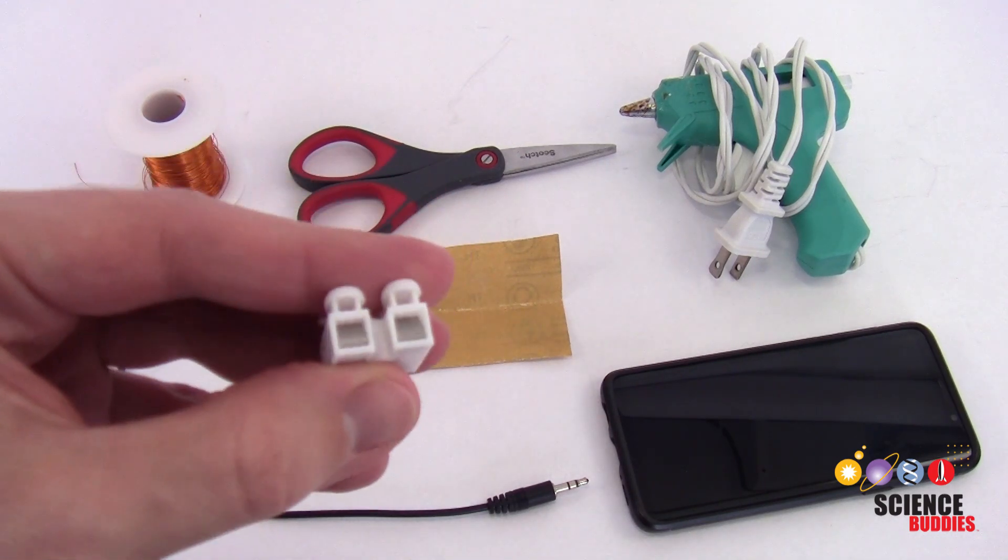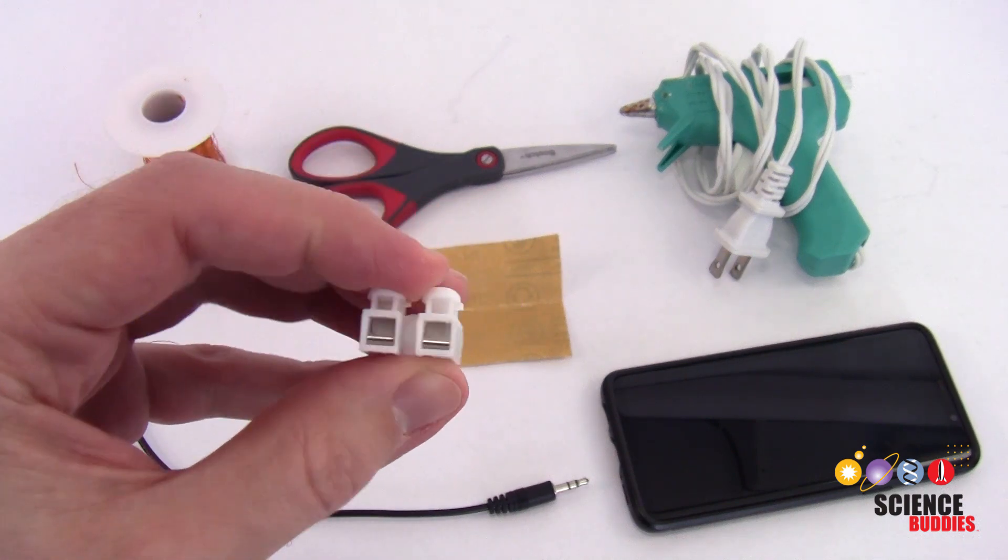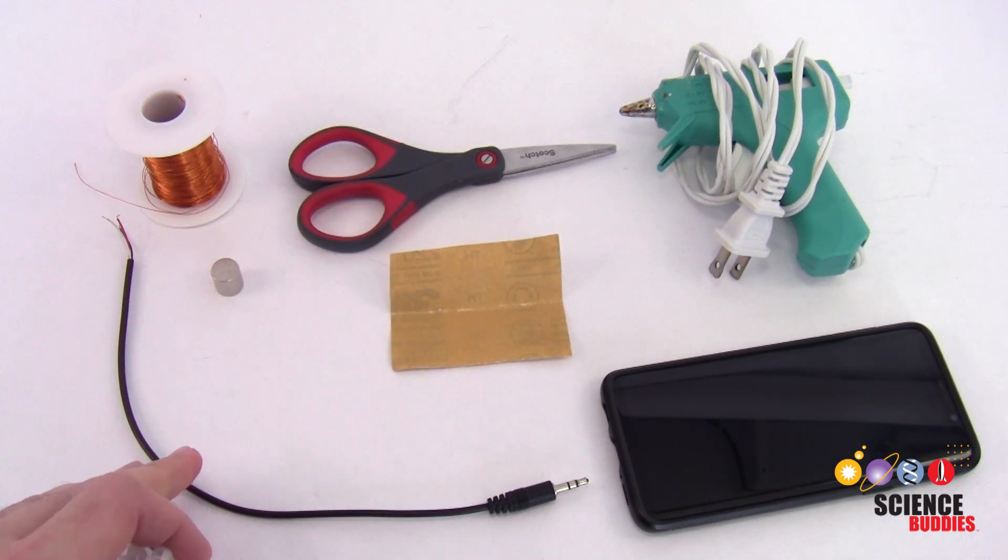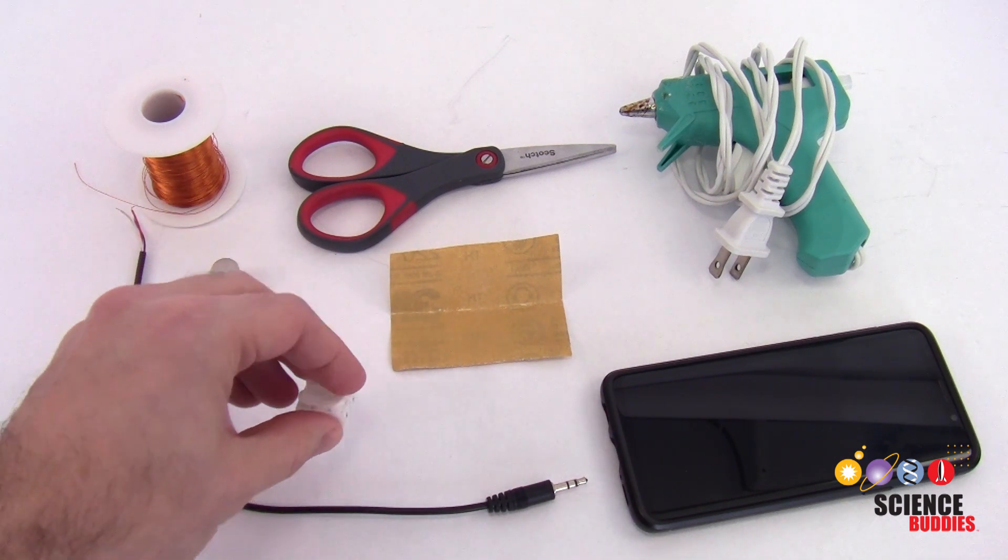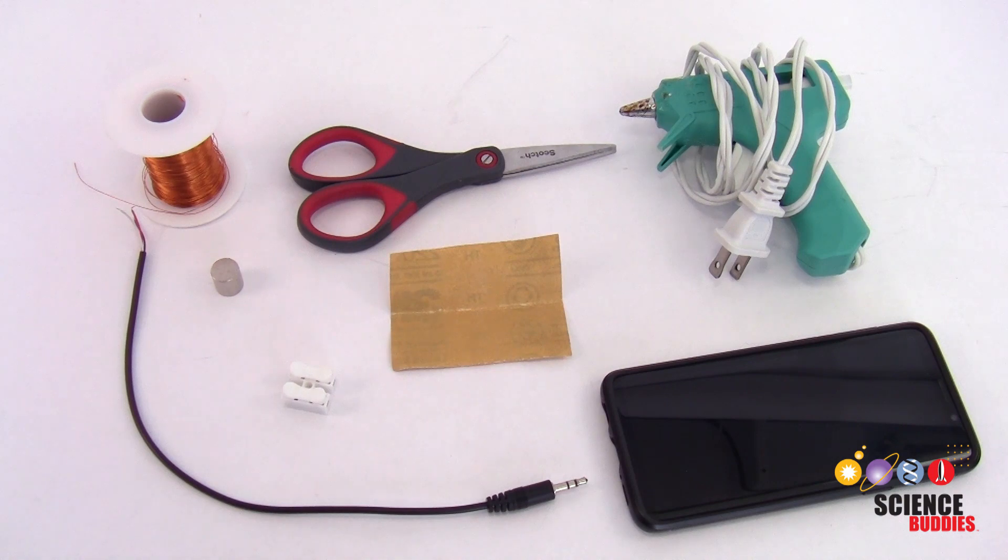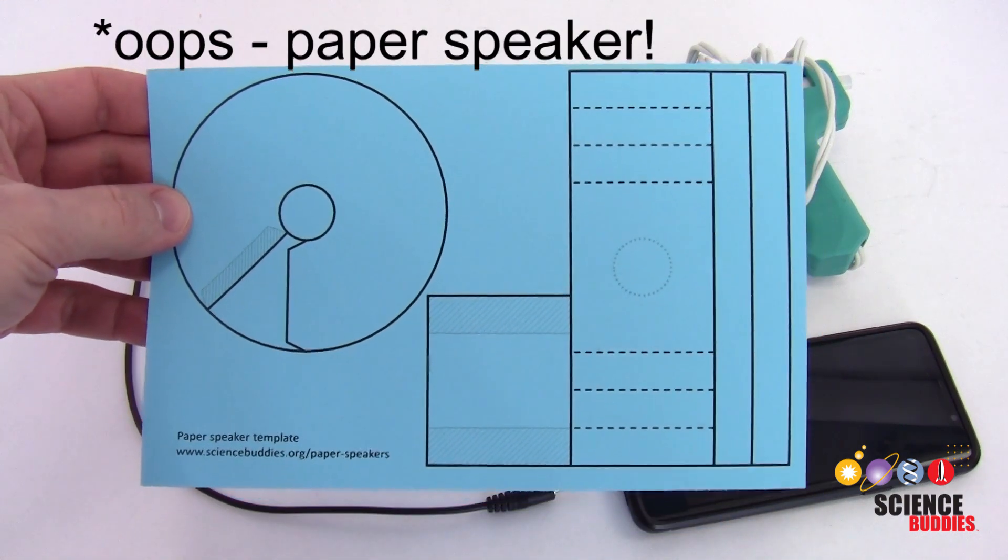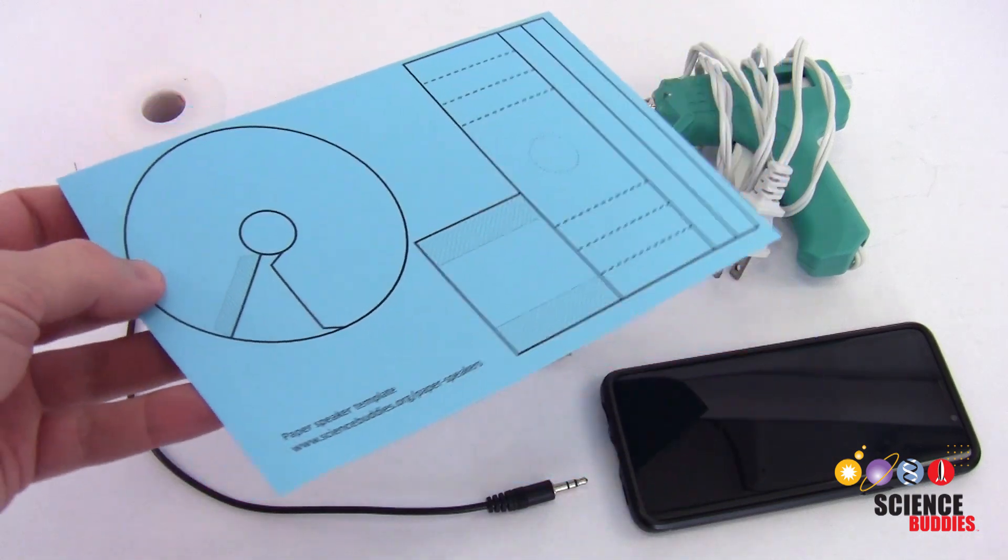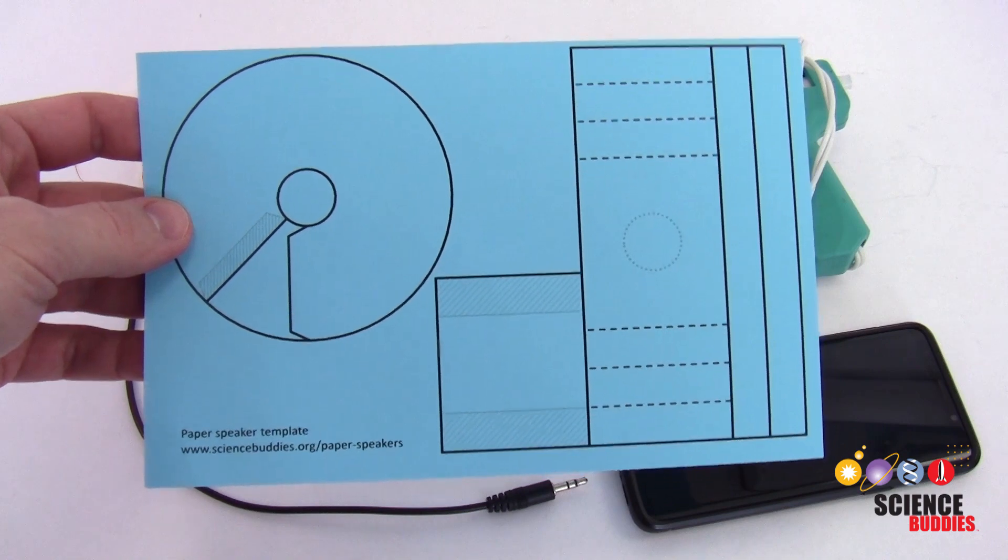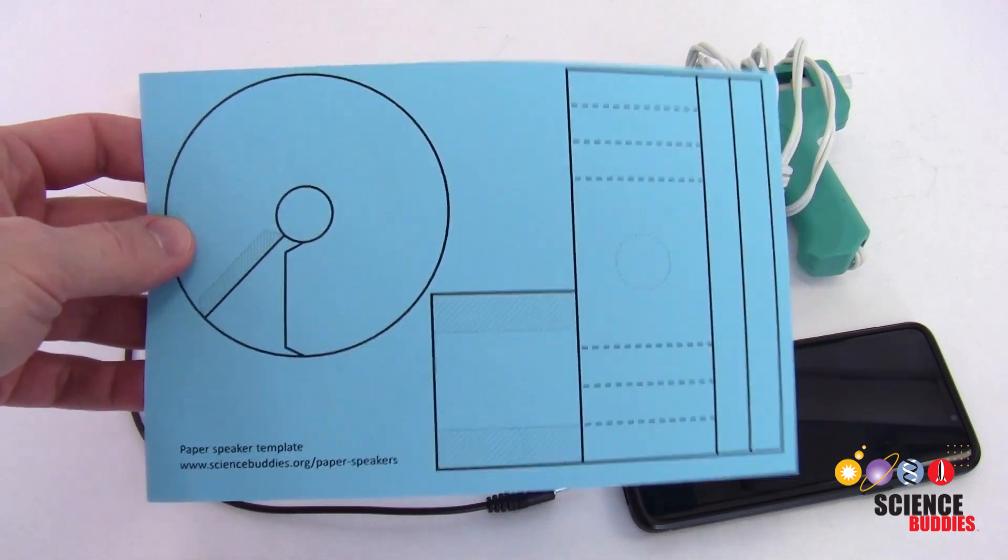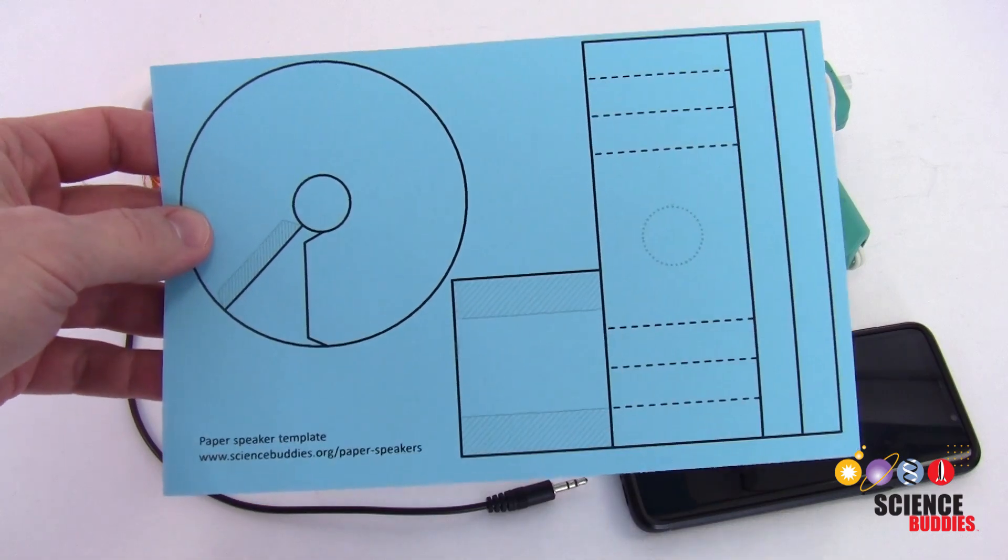And you're going to need a pair of little spring clips like this, which are going to allow us to easily connect the 3.5 millimeter cable to the magnet wire without requiring any tools. Finally, you are also going to need the printable paper circuit template, which is available on the Science Buddies website. You're going to want to print this on cardstock or thick paper. It will work if you print it on regular printer paper, but your speaker is going to be a little louder and sound better if you print it on rigid paper like cardstock.